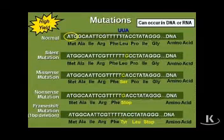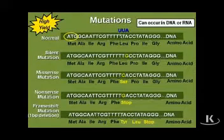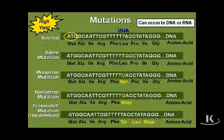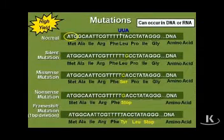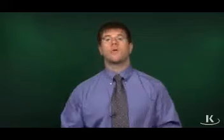Now we're going to look at this leucine codon. If the coding strand of DNA reads TTA, this will correspond to an RNA that at this particular point reads UUA. So that's going to be our normal codon sequence, UUA.